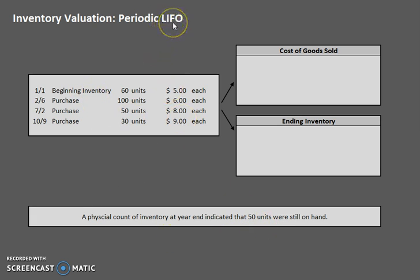Now LIFO stands for last in first out. So the last ones that we purchased — the ones at the bottom layer — remember this is in chronological order — the last ones in are the first ones out, meaning sold.